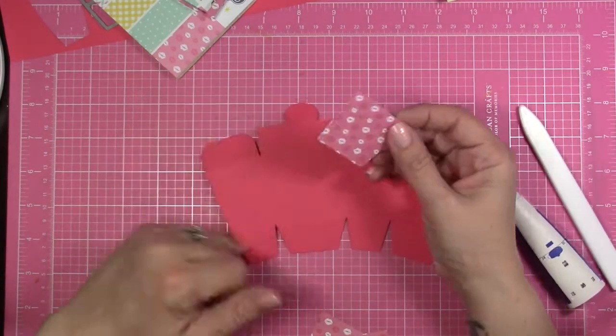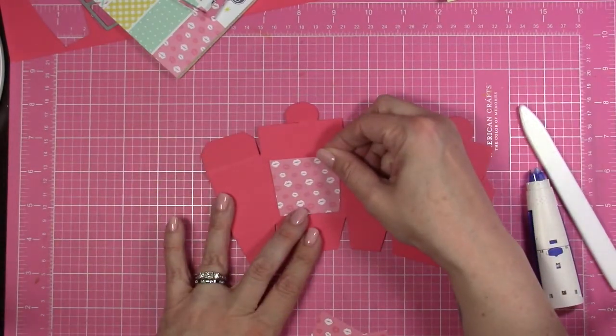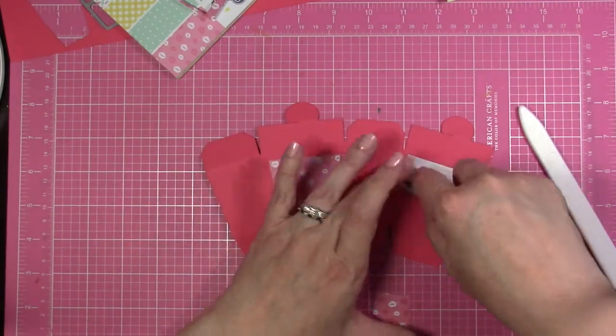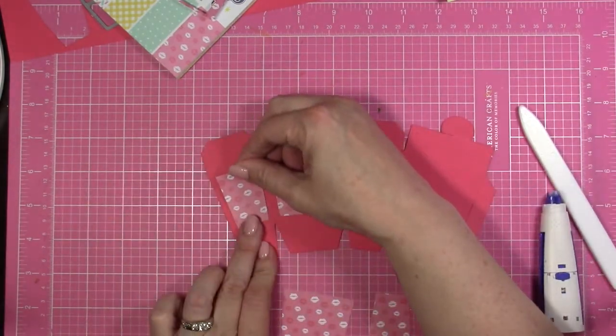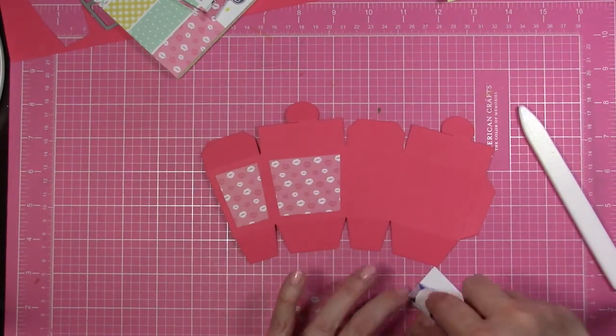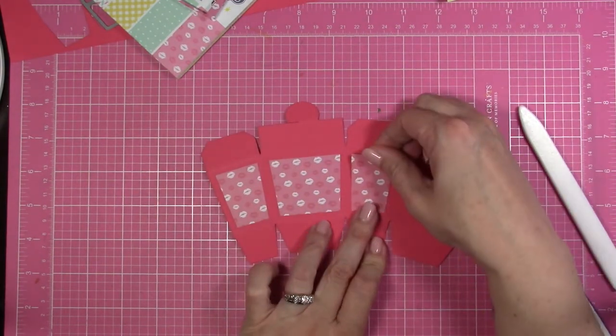And then we're going to use some, you want to use a really good piece of adhesive, tape adhesive. I like to use either sticky strip or, I think it's called score tape, is the tape that I'm going to use.